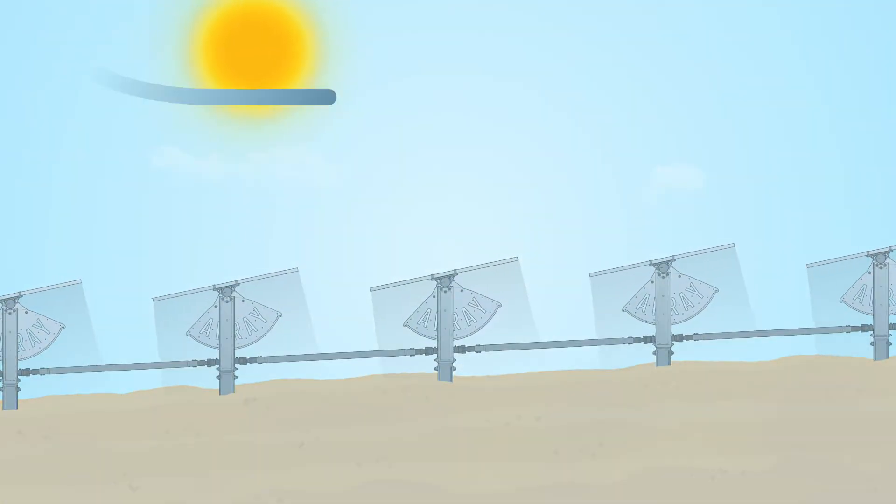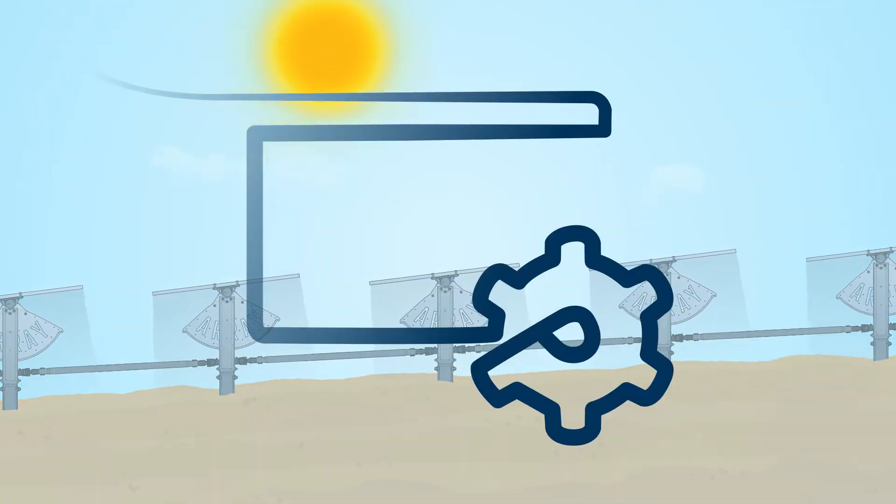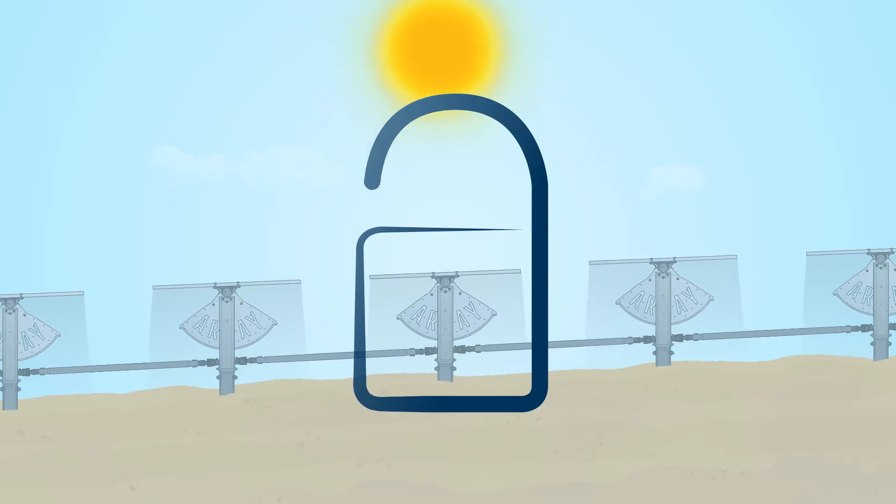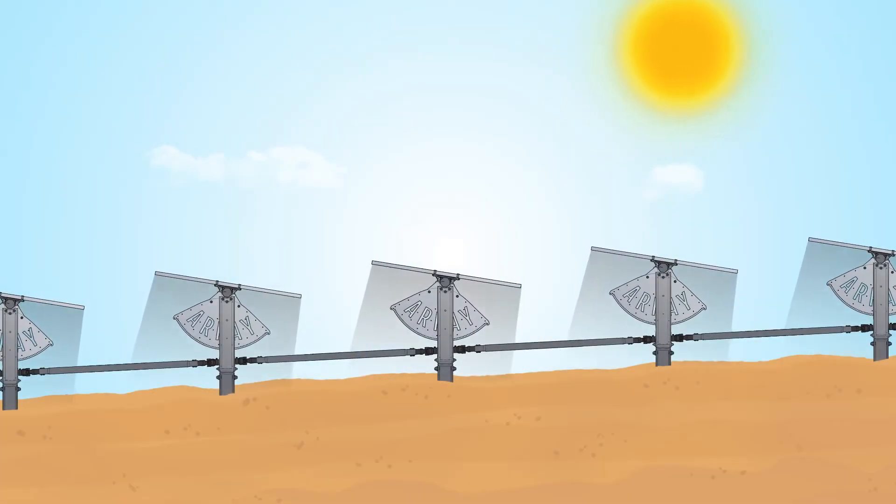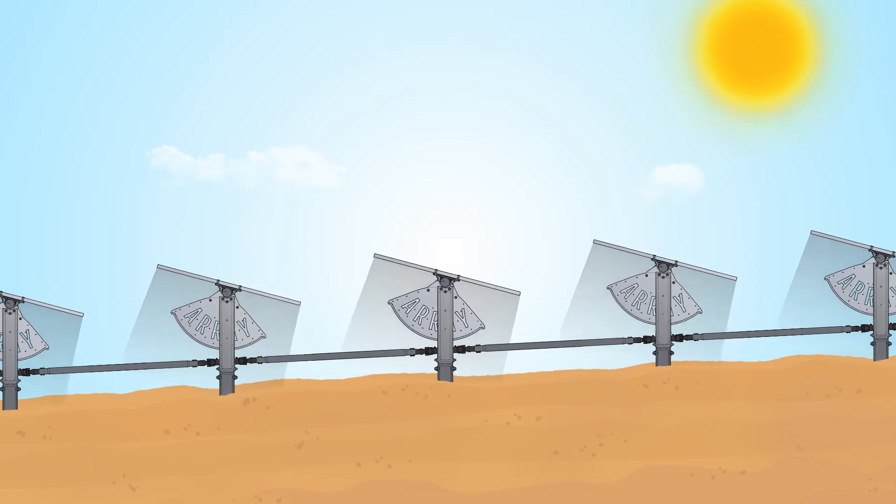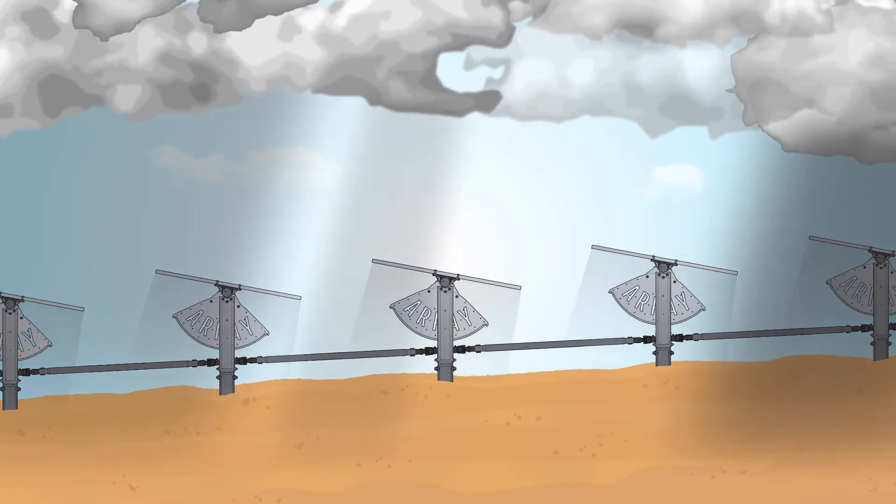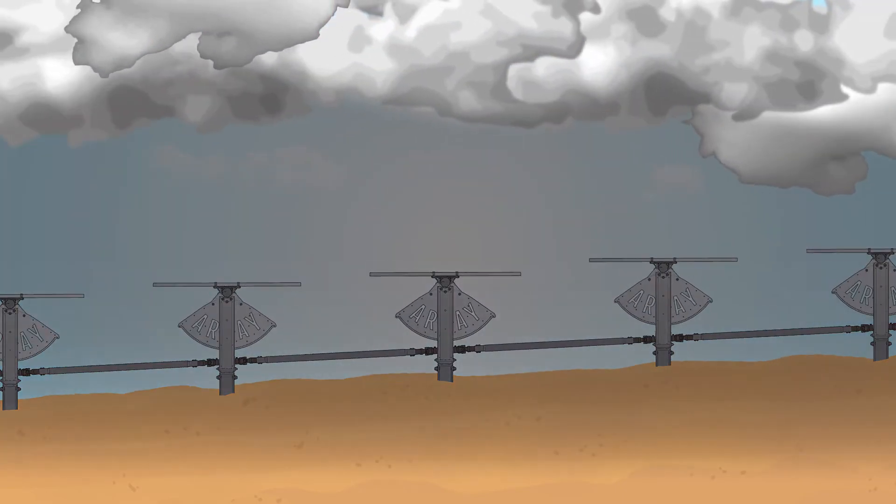Supported by solar application developers at Array, SmartTrack operates securely on-site without the necessity of data leaving the plant, and it dramatically regains lost kilowatt hours from row-to-row shading caused by uneven terrain and diffuse light conditions.